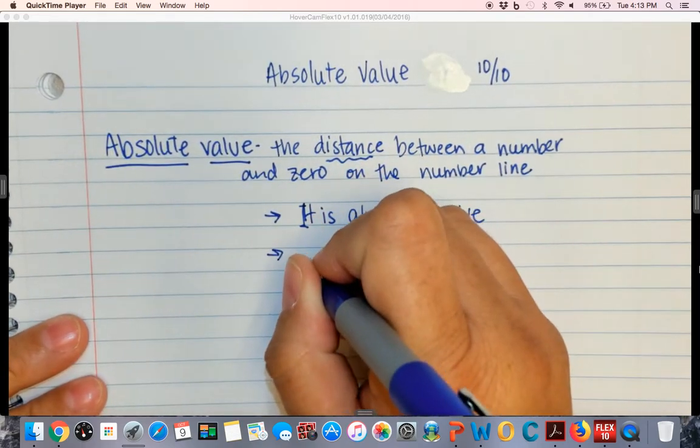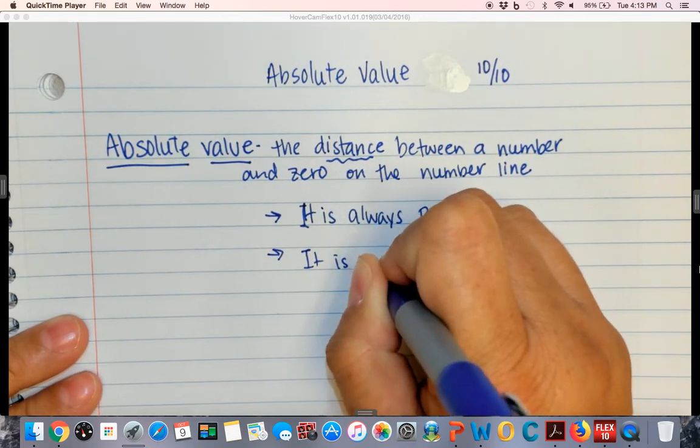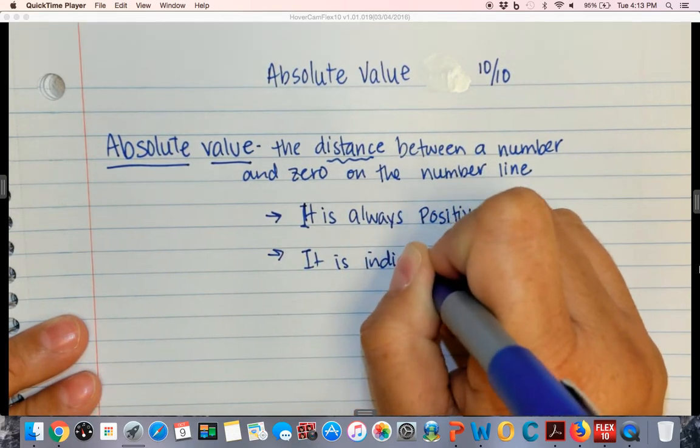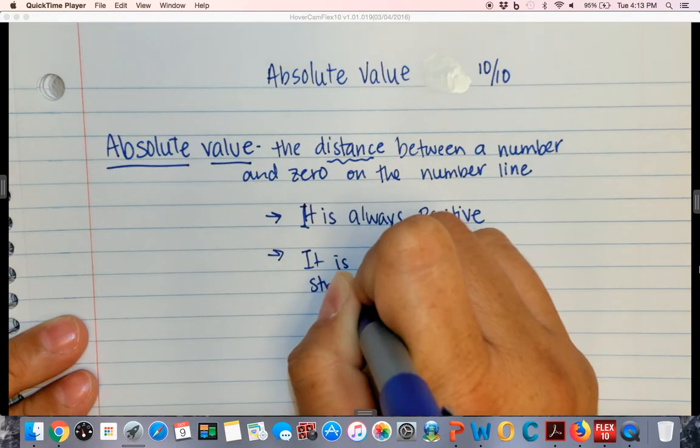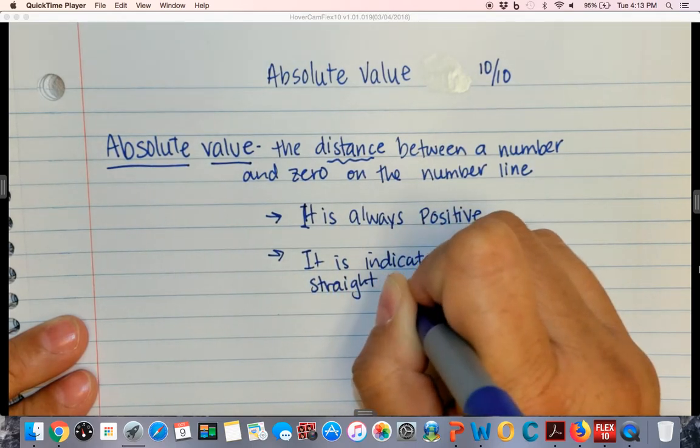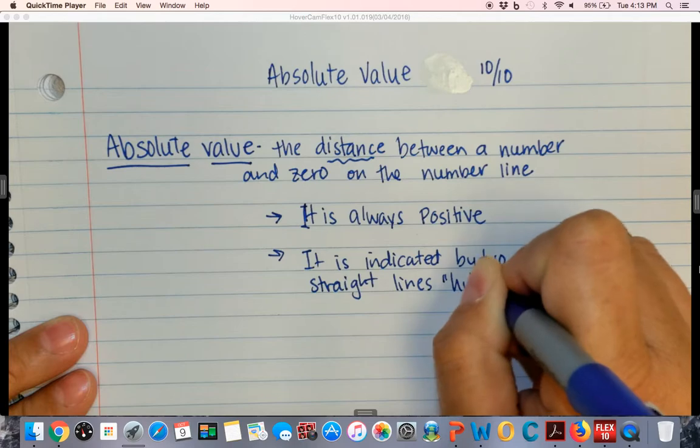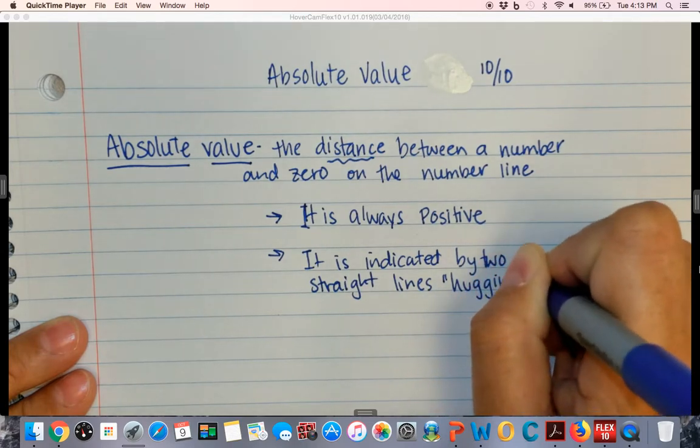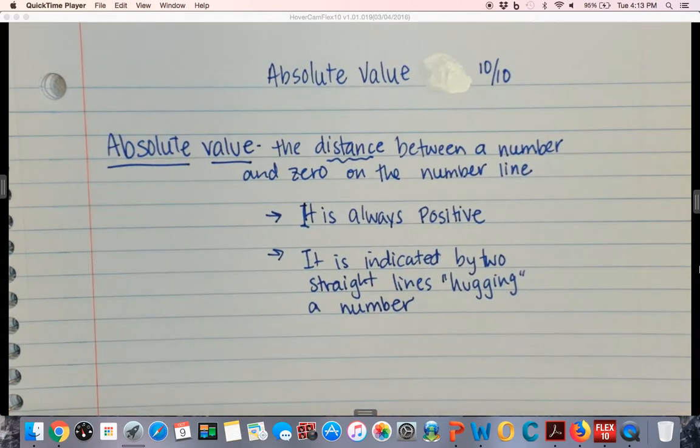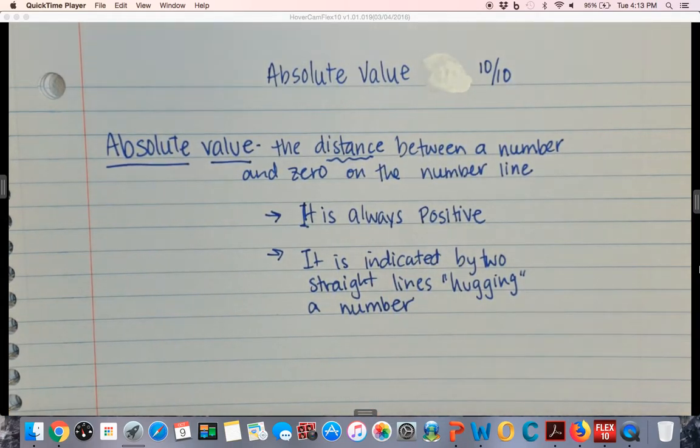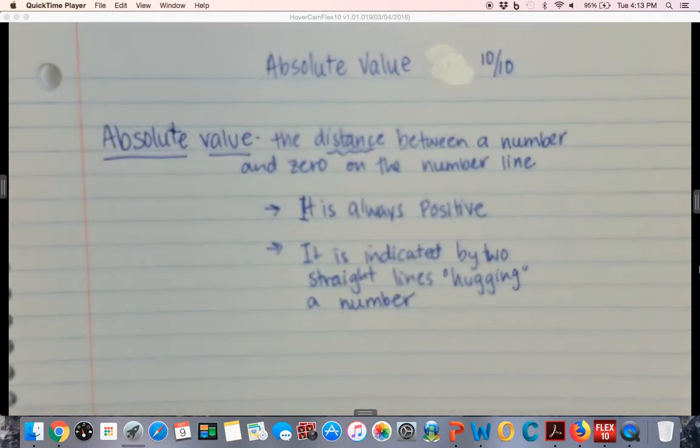And the second thing is that it is indicated by two straight lines and I call it hugging a number. And the way that I remember absolute value is that hugging is always a positive thing. So my answer is always going to be a positive number. The cornier you can get the better it is for you to remember.